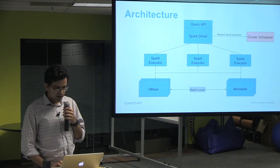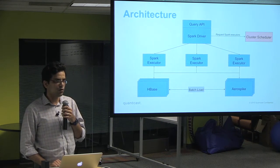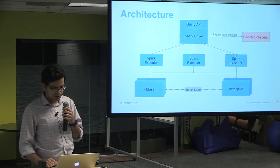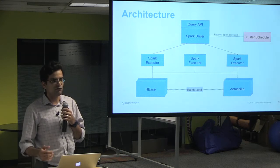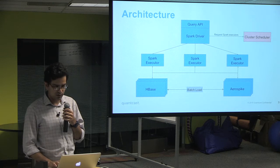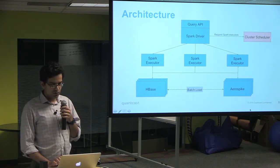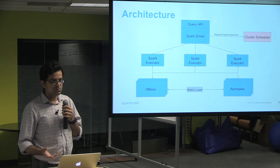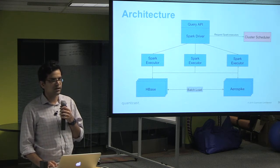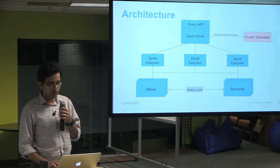In this architecture, the Spark executors are long-lived — they stay alive all the time and service multiple queries. This is because we cannot afford to bring up executors every time a new query comes in, since we're trying to keep latency low. Separate from this is our cluster scheduler, which allocates Spark executors on our cluster, giving us a fault-tolerant architecture where if we lose executors, the Spark driver will realize that and ask for new ones in their place.